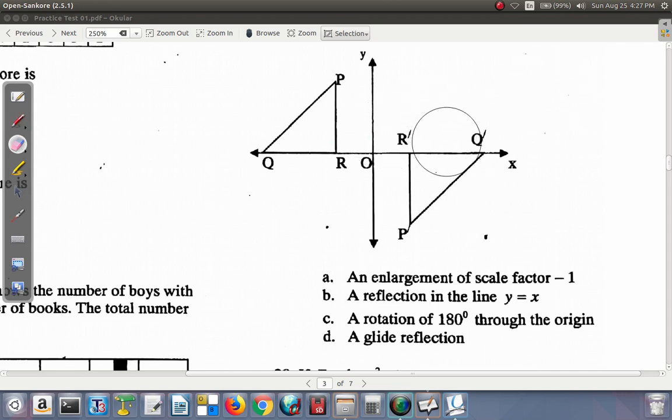So we can rule out D. We ruled out A already and B. So let's look at C. A rotation of 180 degrees through the origin. Now you do have an angle and you have here a center of rotation, which is the origin.